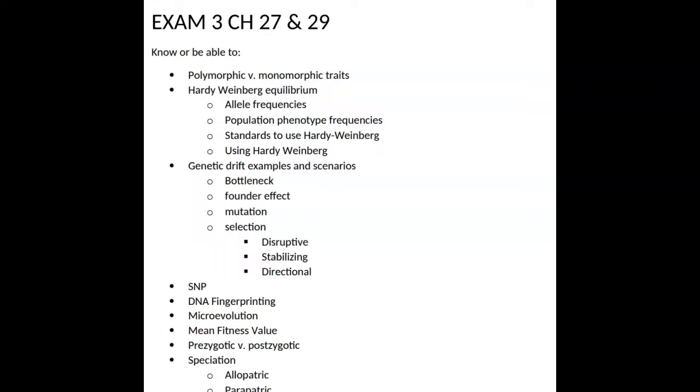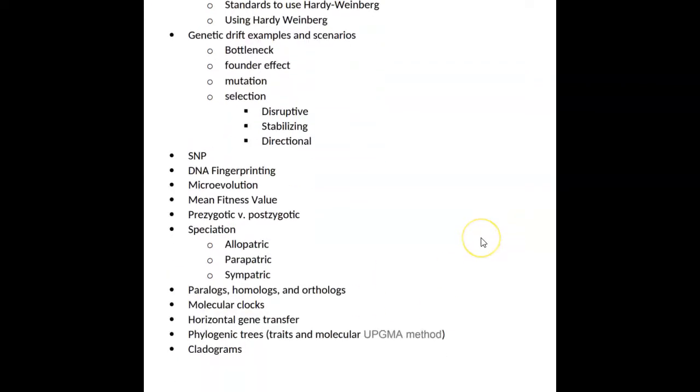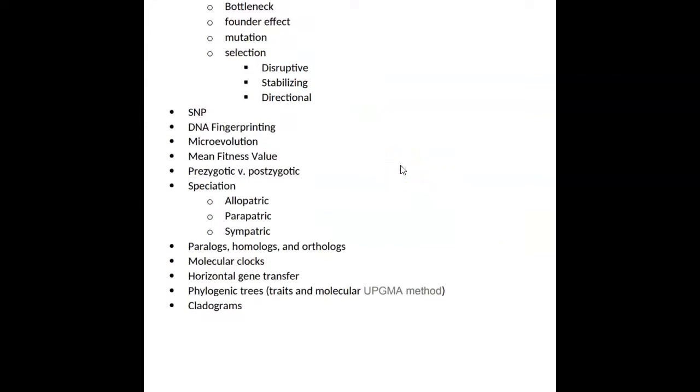You want to know examples of things that cause genetic drift - bottlenecking, founder effect when a small number of organisms leave a particular area and move somewhere else, or almost all die and a few survive with different traits that repopulate. As far as selections, be able to identify them based on description or a chart. Single nucleotide polymorphism, DNA fingerprinting, very straightforward things. Definitely phylogenic trees - pay attention to the UPGMA method of how we do phylogeny. And with cladistics, understand cladograms and the relationships between organisms.